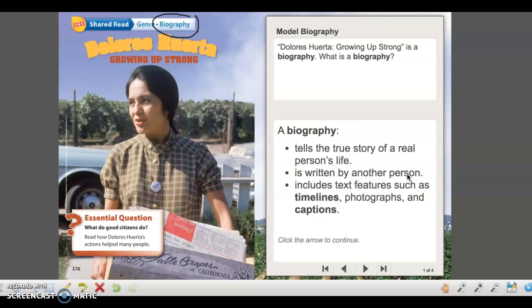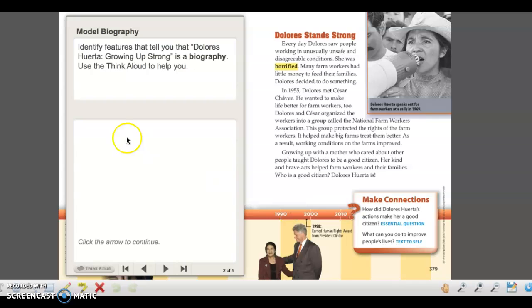There are some text features that are common in most biographies. Some of those are timelines, photographs, and captions. For today's lesson we're going to focus on timelines and captions. So let's move on. What we need to do right now is identify features that tell you that Dolores Huerta, Growing Up Strong, is a biography.